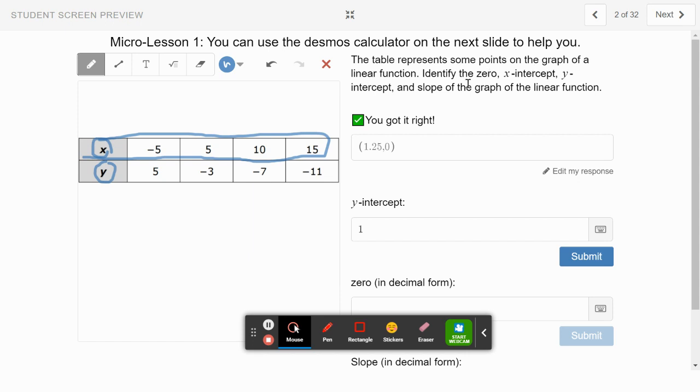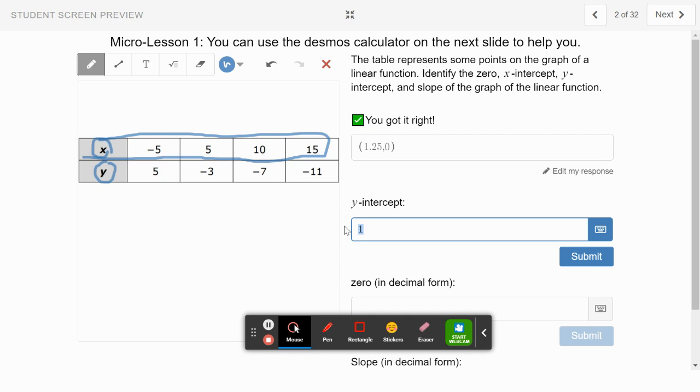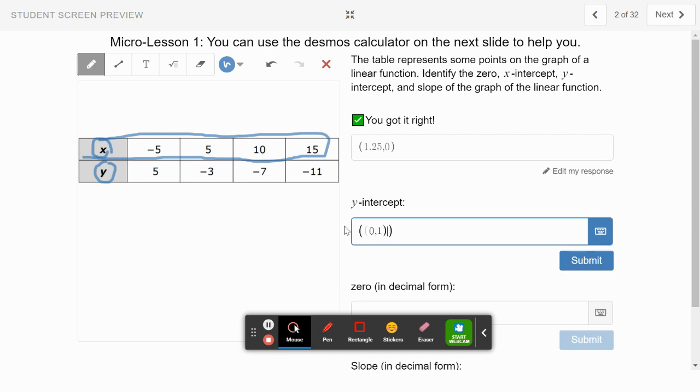The y-intercept: if I just put 1 it tells me to try again. The y-intercept is when the x value is 0, so that's going to be 0 comma 1, close parentheses. Press submit. Now that's right, great!